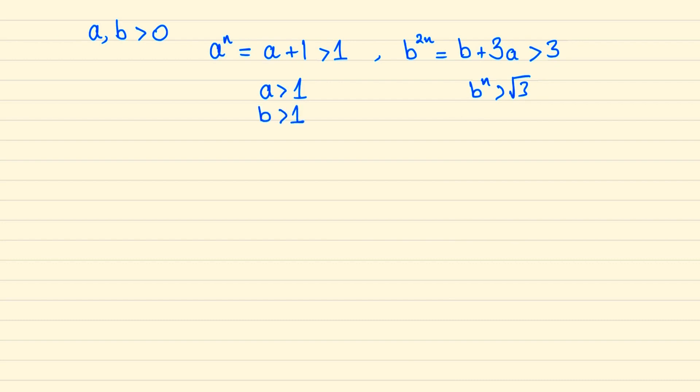Now since we're dealing with b to the 2n, we might try and square a to the n, so we can write that a to the 2n is a plus one squared, or a squared plus two a plus one.